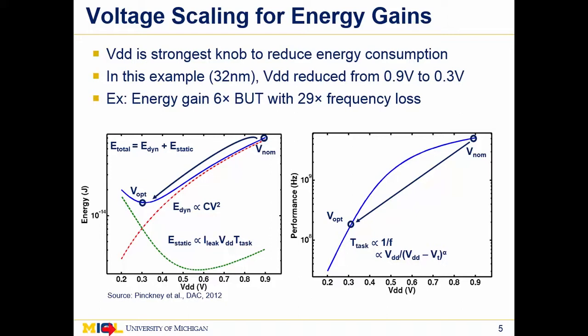Once you get down to very low voltages, something interesting happens. When the supply voltage approaches the threshold voltage of the devices, the time to perform a given task grows exponentially, as shown in the right plot. This means static energy starts to grow rapidly, and eventually total energy reaches a minimum at V_opt. This V_opt value depends on circuit activity and technology, among other things. Reducing supply voltage is very helpful and is a key part of most ultra low power systems, but reducing it too far is counterproductive for both energy efficiency and performance. A good rule of thumb for digital systems is to operate about 100 to 200 millivolts above threshold voltage.